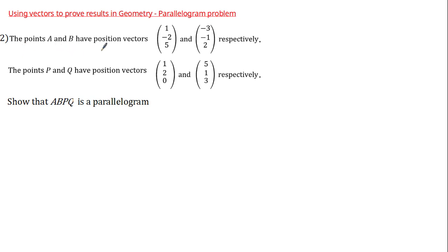Let's have a look at the next problem. We're told that points A and B have position vectors (1, -2, 5) and (-3, -1, 2) respectively, and points P and Q have position vectors (1, 2, 0) and (5, 1, 3) respectively. We've been asked to show that ABPQ is a parallelogram. Pause here to try it yourself.